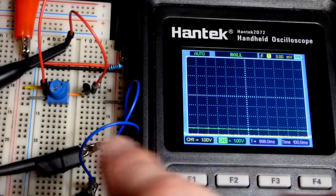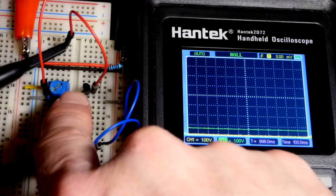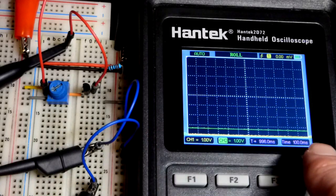Down at the bottom we have our yellow line, that's channel one, that's where I'm taking the measurement where the wiper of the trim pot is. The trim pot is set all the way down to the negative rail so it is zero volts.